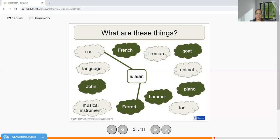So what are these things? How do you need to make sentences from these? Let me give you some examples. Ferrari is a car. John is a French man. English is a beautiful language. Piano is an instrument, or it is a musical instrument. Like this you need to apply them.